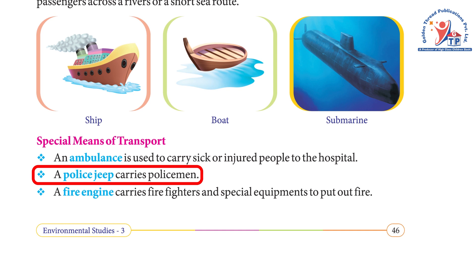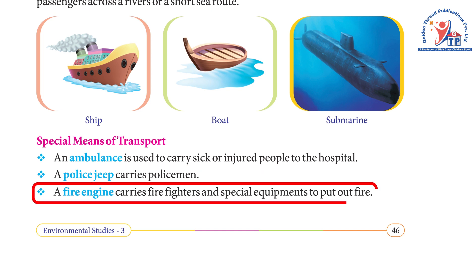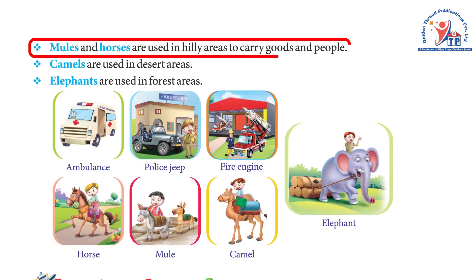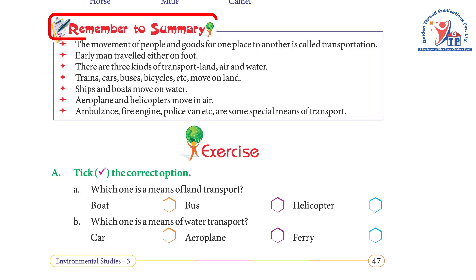Special means of transport: An ambulance is used to carry sick or injured people to the hospital. A police jeep carries policemen. A fire engine carries firefighters and special equipment to put out fires. Mules and horses are used in hilly areas to carry goods and people. Camels are used in desert areas, and elephants are used in forest areas.